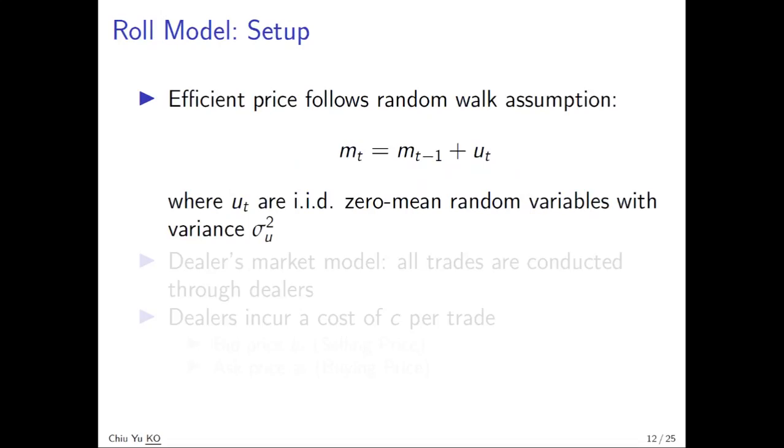The setup is rather simple. The Roll model assumes the efficient price, which is unobserved, follows the random walk assumption. So the efficient price is m_t, which is efficient price at time t, equal to the efficient price last period m_{t-1}, plus a random term. This random term is IID random variable with zero mean and a constant variance σ²_u.